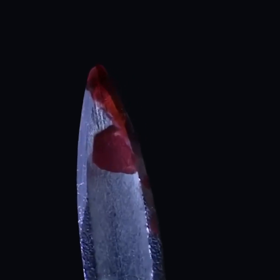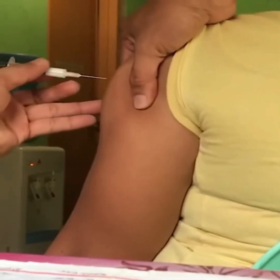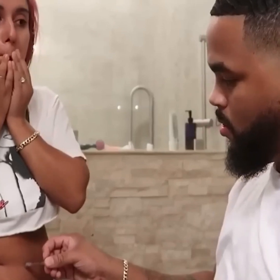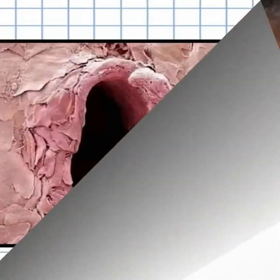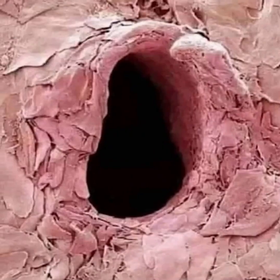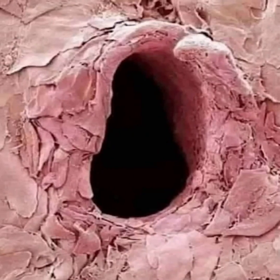Have you ever seen the other name of terror — that is, the coronavirus in the microscope? If not, then see today. When the mask of a coronavirus patient was taken and zoomed in the microscope, the virus was seen at the very end, which looked very dangerous.